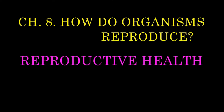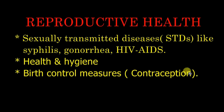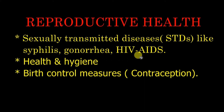Let's discuss reproductive health as part of chapter eight on how organisms reproduce. The first major concern is how to stop the transmission of sexually transmitted diseases such as syphilis, gonorrhea, and HIV/AIDS. Syphilis and gonorrhea are bacterial diseases, while HIV/AIDS and warts are viral diseases. We should know how to protect ourselves from STDs.